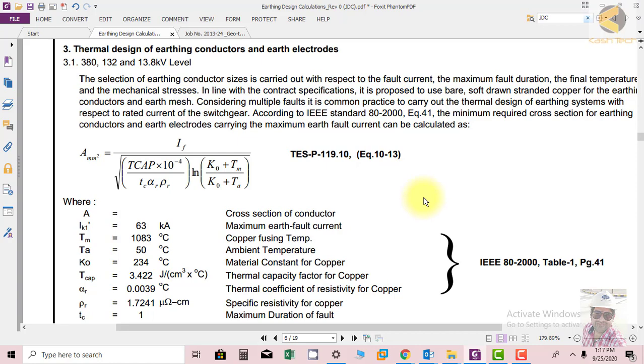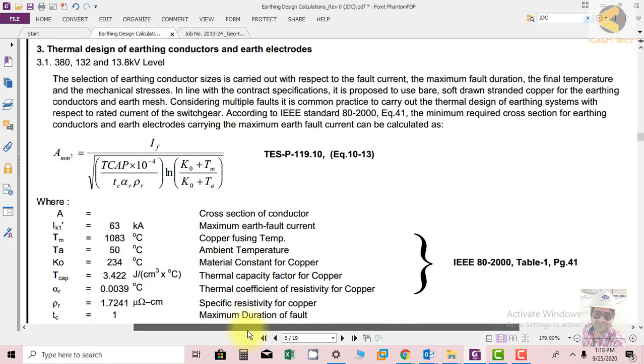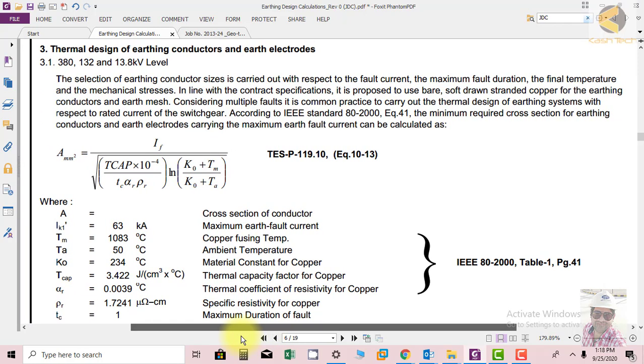In line with the contract specification, it is proposed to use bare soft drawn stranded copper for earthing conductor and earth mesh. As per the specification, we have to use a bare multi-strand conductor